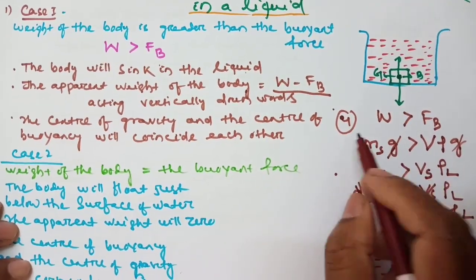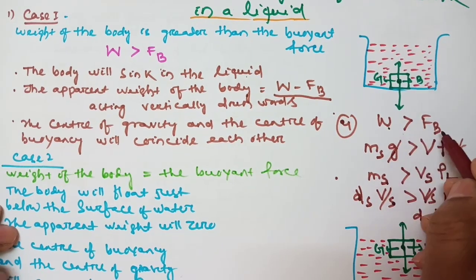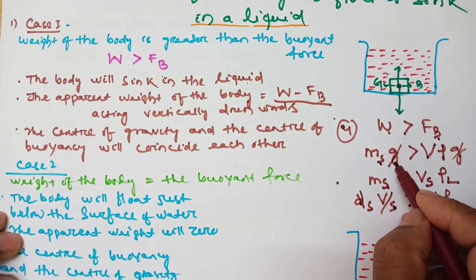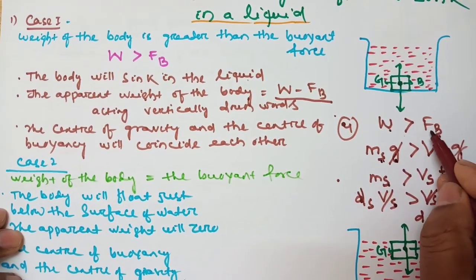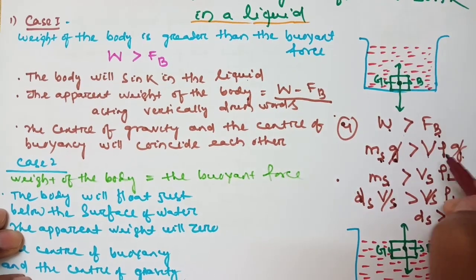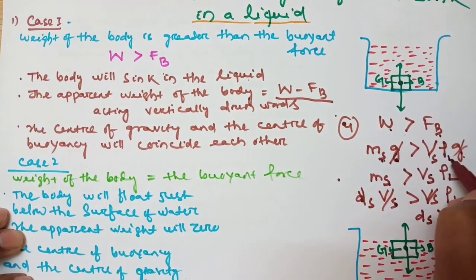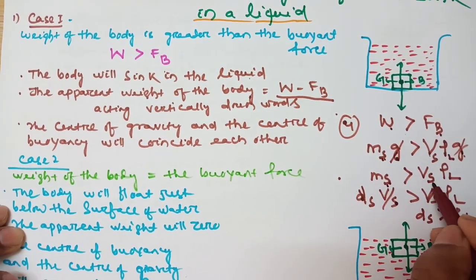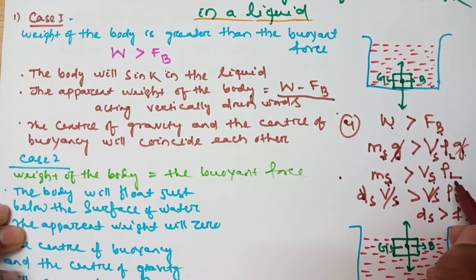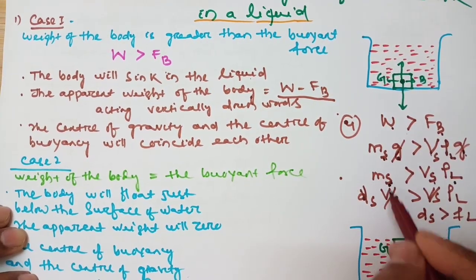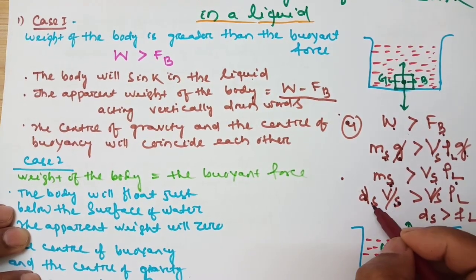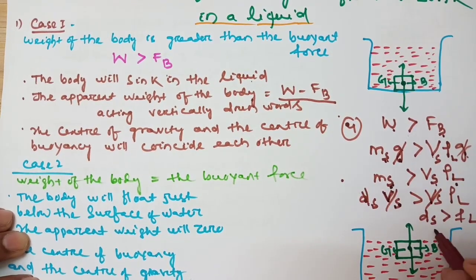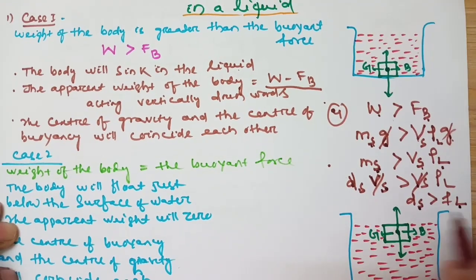To confirm: if W is greater than buoyant force, weight of body equals mass into acceleration due to gravity, that is mass of solid into G. Buoyant force equals V·ρ·G — volume of solid into density of liquid into G. G cancels. Putting mass of solid as density into volume, volume cancels. So density of solid is greater than density of liquid.